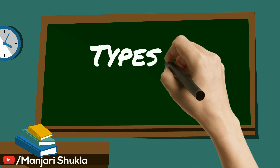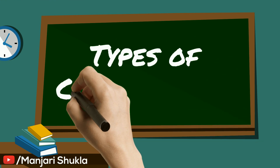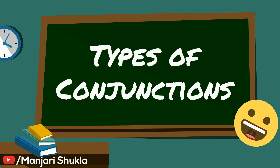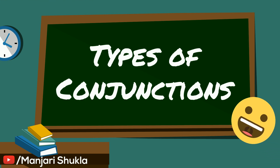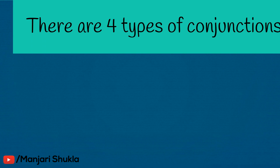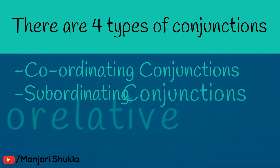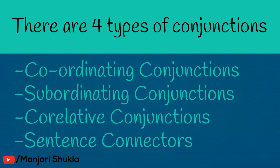Types of conjunctions. There are four types of conjunctions: coordinating conjunctions, subordinating conjunctions, correlative conjunctions, and sentence connectors.